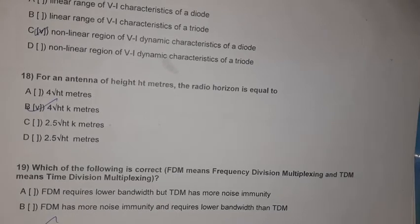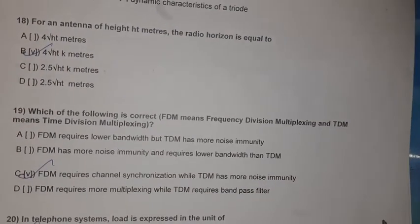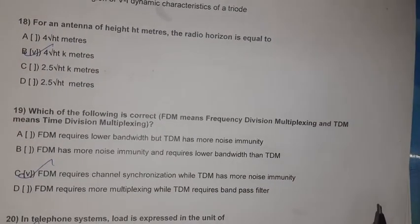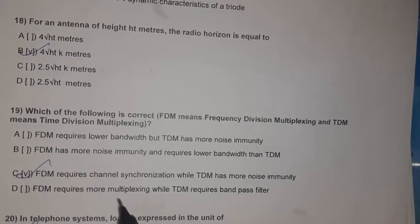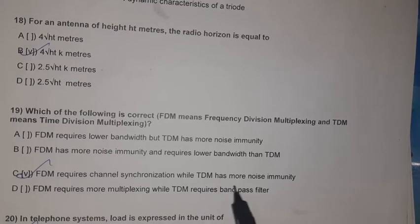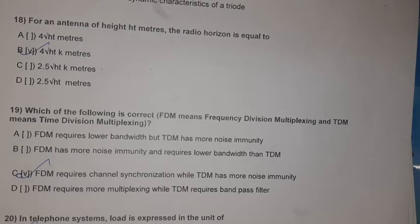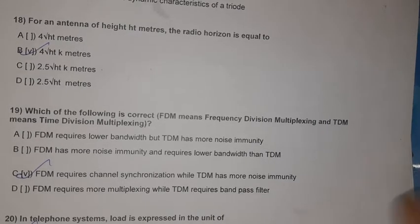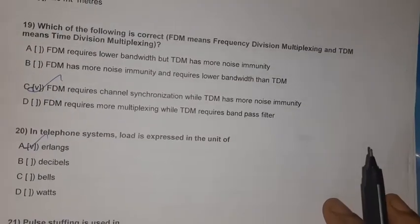Question 19: FDM means Frequency Division Multiplexing; TDM means Time Division Multiplexing. FDM requires channel synchronization while TDM has more noise immunity.